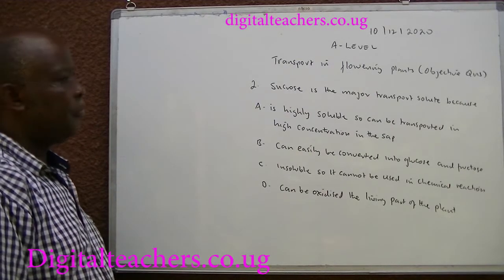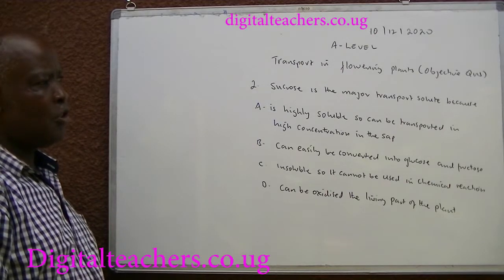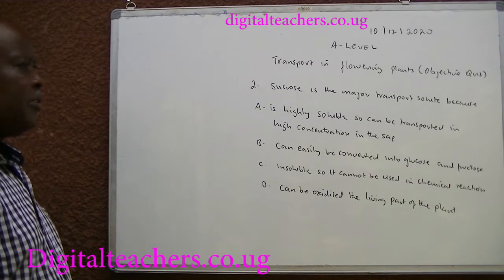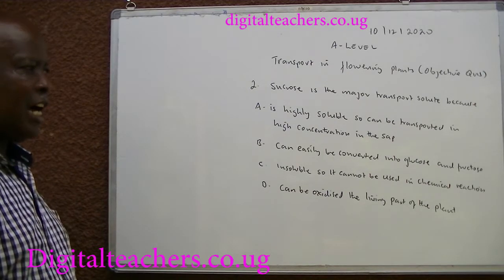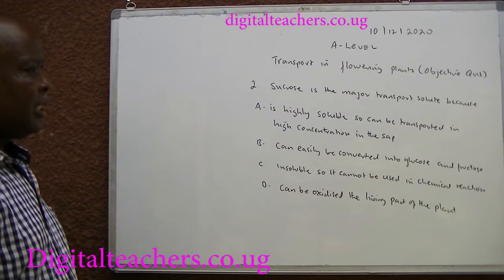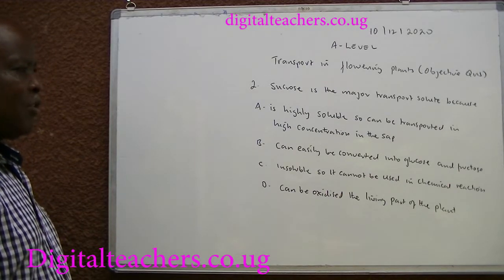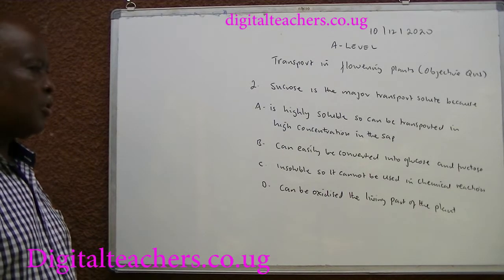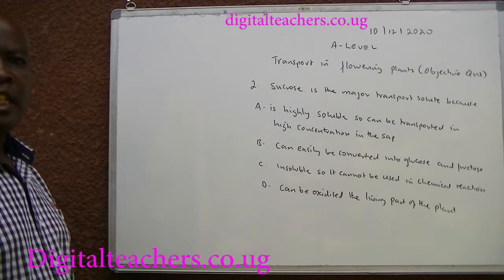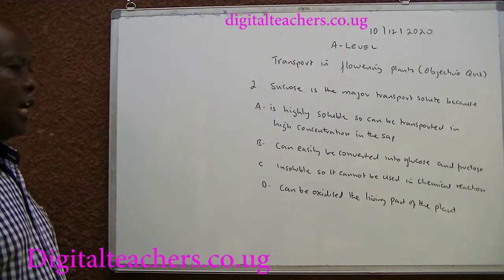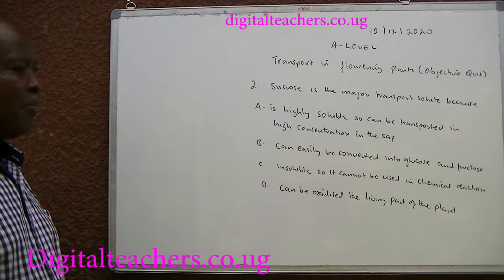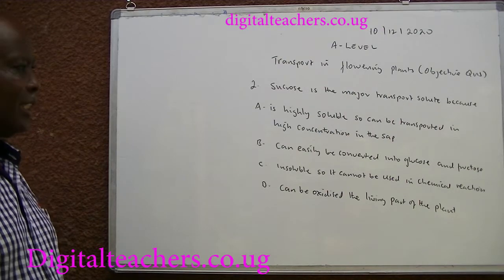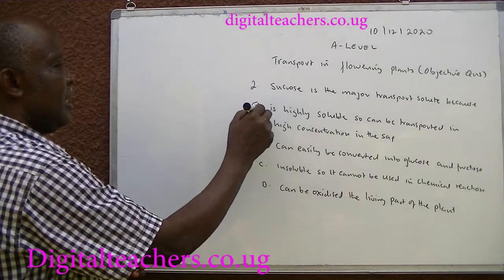Number 2. Sucrose is the major transport solute. A. Because it is highly soluble, so can be transported in a high concentration in the sap. B. Can easily be converted into glucose and fructose. C. Insoluble, so cannot be used in a chemical reaction. D. Can be oxidized in a living part of the plant. You can pause and answer. The answer is A.